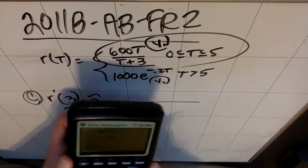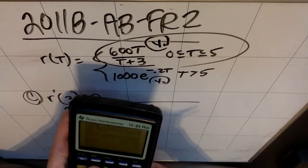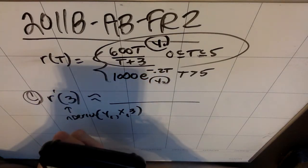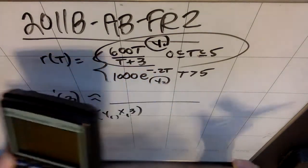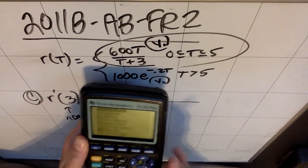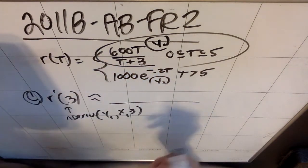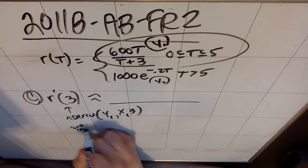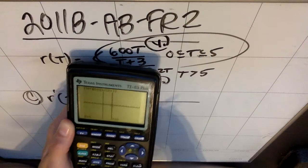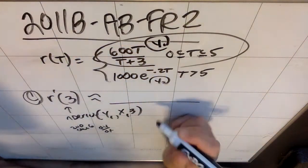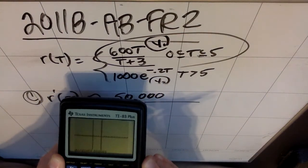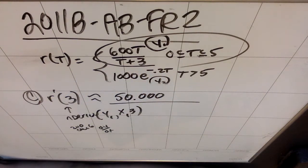So, if I turn off my y2, the other thing you can do is you can graph. Now, I have a weird window because I was doing a different problem before this. So, if I graph this, the other option is I can do second calc, and you'll notice that dy dx is a choice. So, I could pick second calc dy dx. So, I could do second calc six, which would be dy dx. And if I hit that, it's then going to let me pick the x value I want, which is 3. And that's going to give me that it's 50.000. So, 50.000.